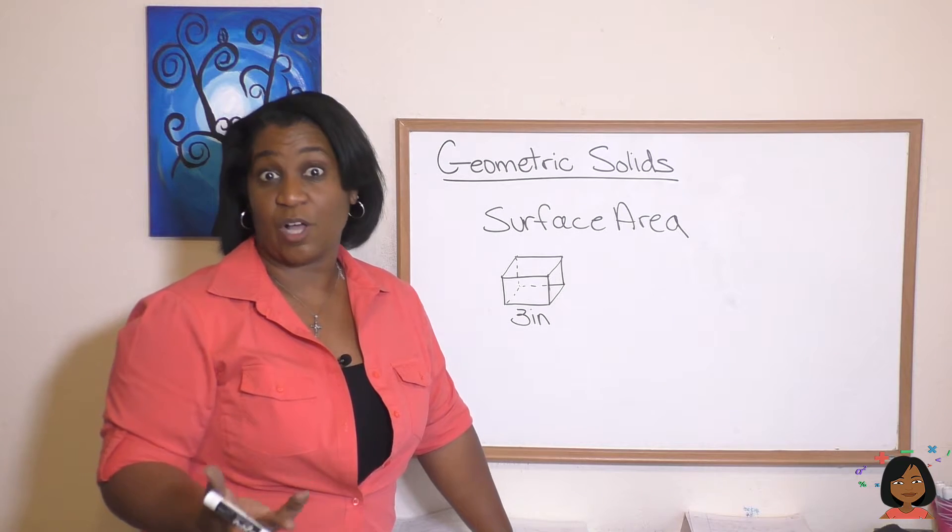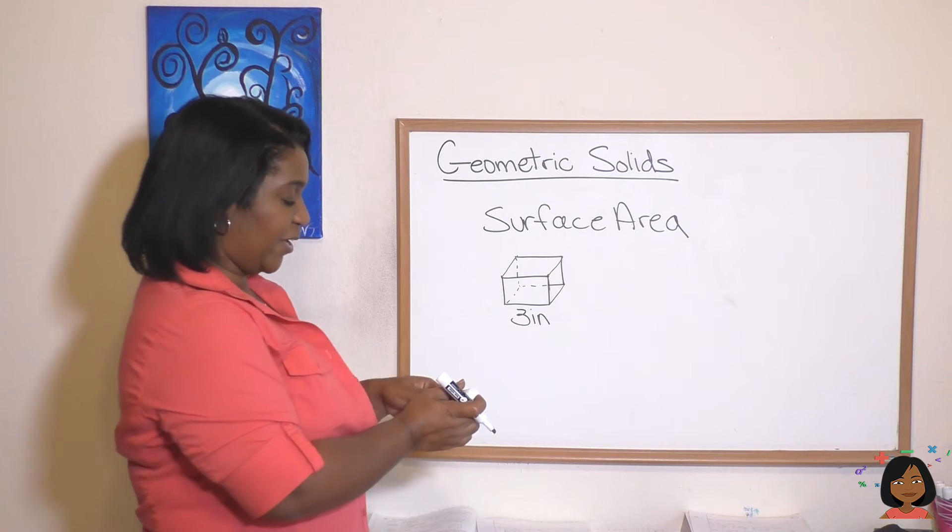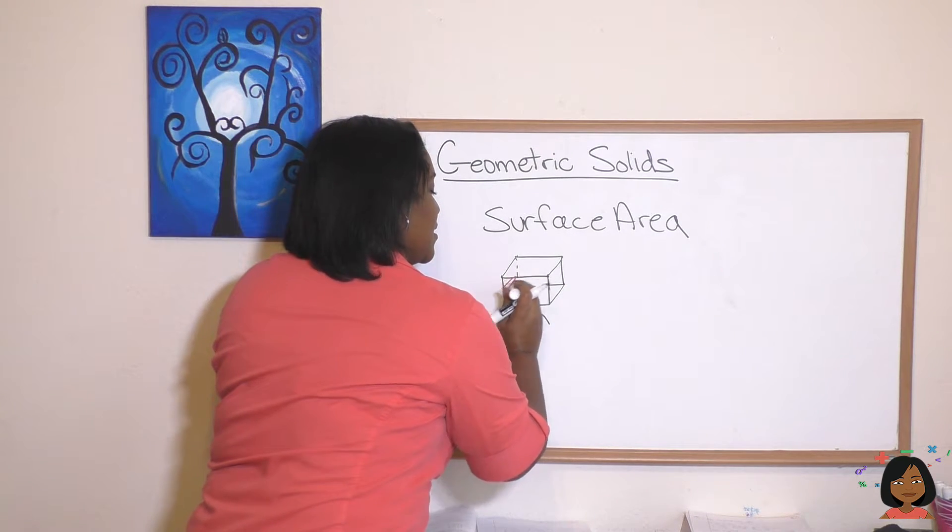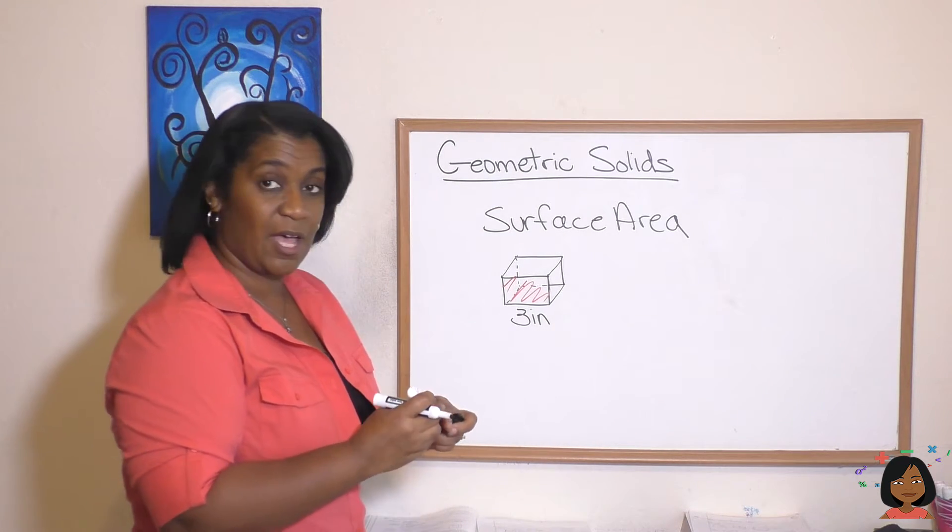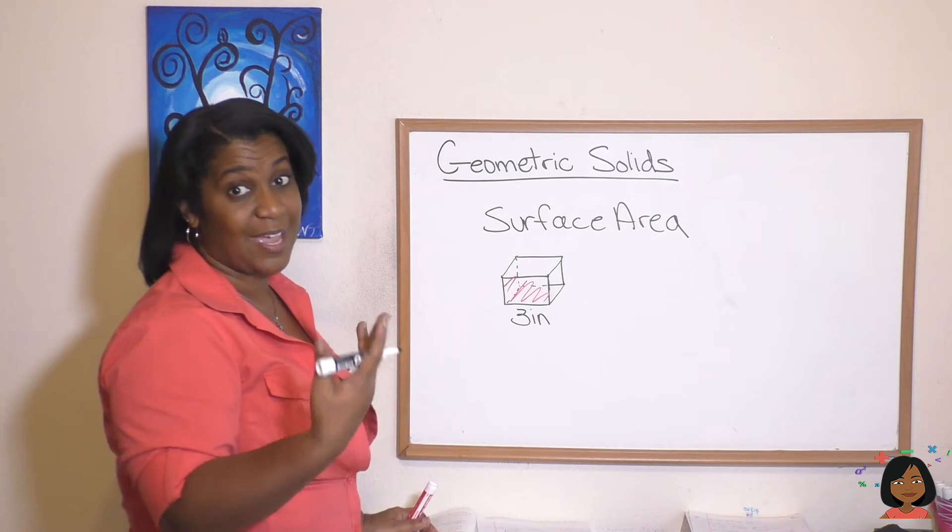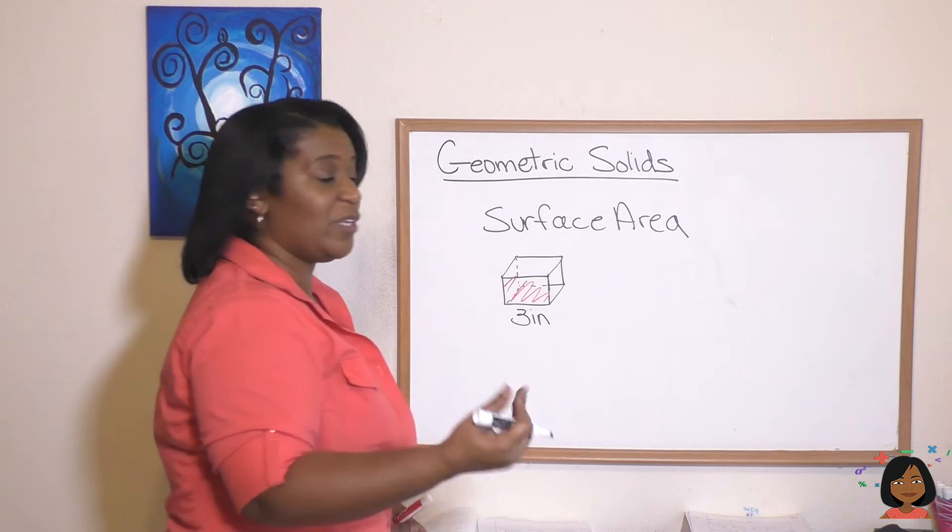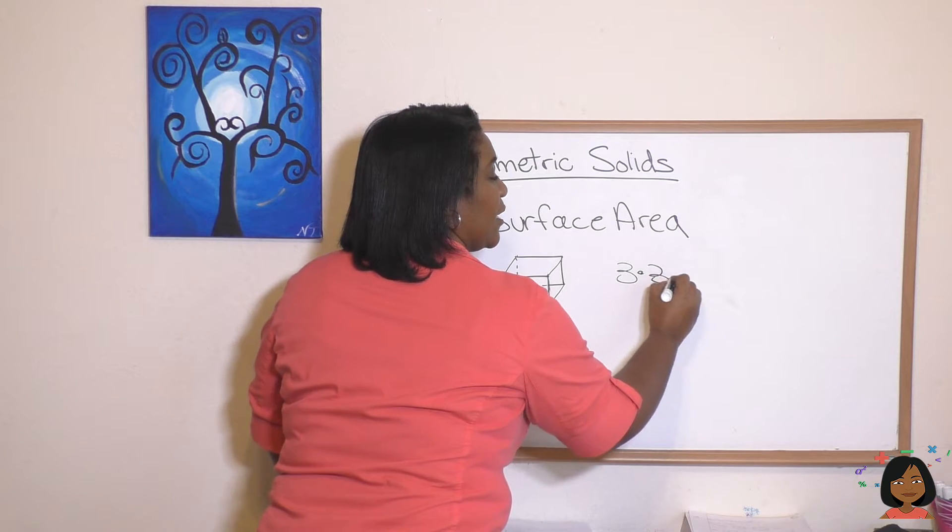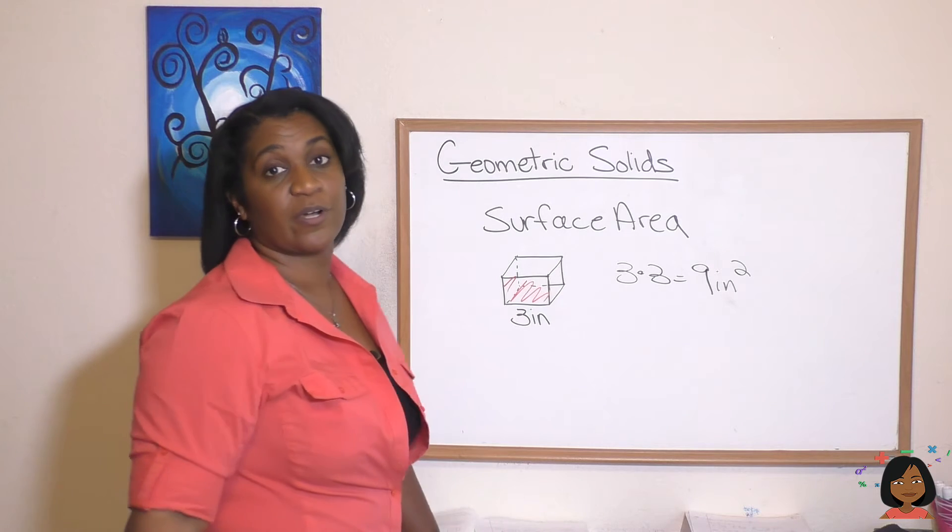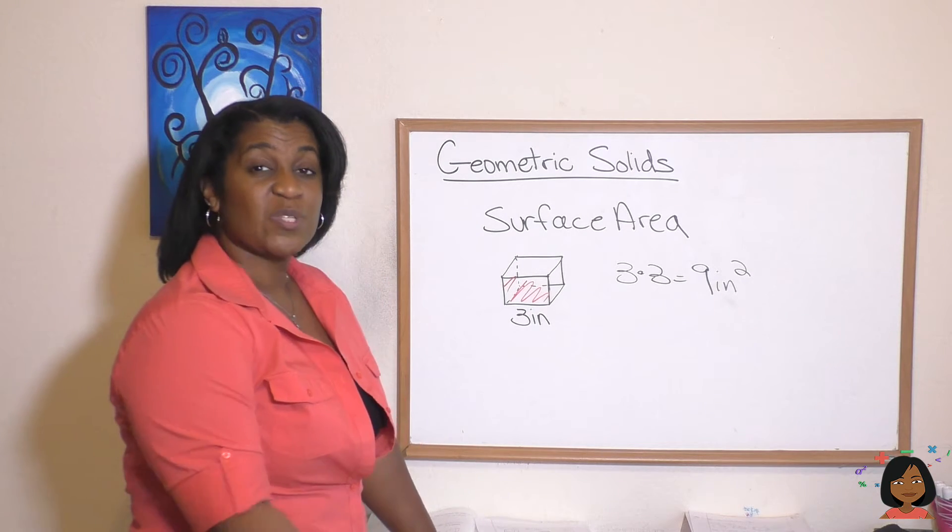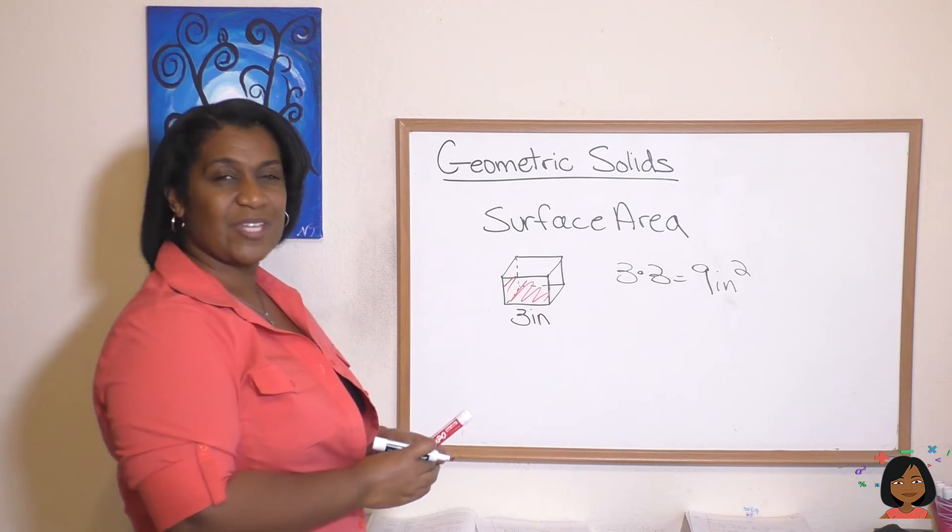The last concept I want to introduce you to is what's called surface area. Well, you've learned area, remember? When we had just a two-dimensional square, the area was the space filled in the plane of the square. And you might remember that the area, the formula was side times side or length times width, which was always the same, right? So we have three inches as our side. We know the area was going to be three times three, and that would give us nine inches squared for just our square. But now we have a cube.